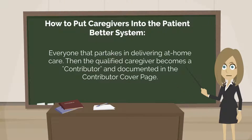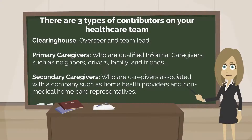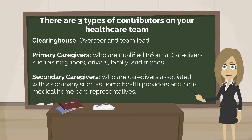The next step is to put caregivers into the Patient Better system — everyone that partakes in delivering at-home care, including yourself. Each qualified caregiver becomes a contributor and is documented in the contributor cover page. There are three types of contributors on your healthcare team: the first is a clearinghouse, which acts as overseer or team lead; the second are primary caregivers, who are qualified informal caregivers such as neighbors, drivers, family, or friends.